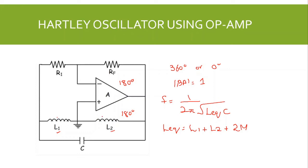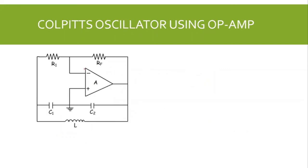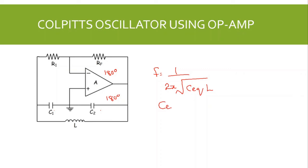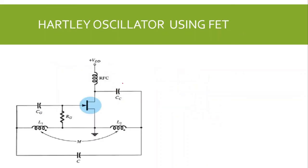In the Colpitts oscillator, the circuit is the same except we have two capacitors and one inductor in the tank circuit. The inverting operational amplifier again provides a phase shift of 180 degrees, and the rest of the phase shift is provided by the LC feedback circuit, giving an overall phase shift of 360 degrees. In the Colpitts oscillator we have two capacitive reactive elements C1 and C2 and one inductive element. The frequency of oscillation is given by f = 1 / (2π √(C_eq × L)), where C_eq = (C1 × C2) / (C1 + C2).